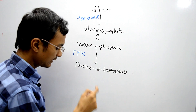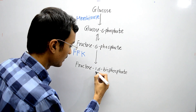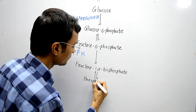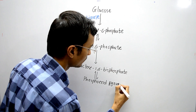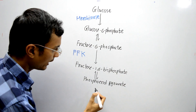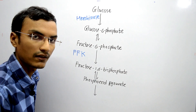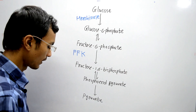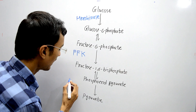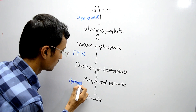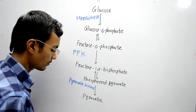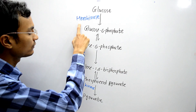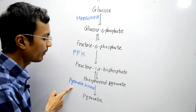Fructose-1,6-bisphosphate, by a series of reactions, is converted into phosphoenolpyruvate. Phosphoenolpyruvate is finally converted into pyruvate, and this step is irreversible. The enzyme used here is pyruvate kinase. So there are three irreversible steps catalyzed by three different enzymes: hexokinase, phosphofructokinase, and pyruvate kinase.